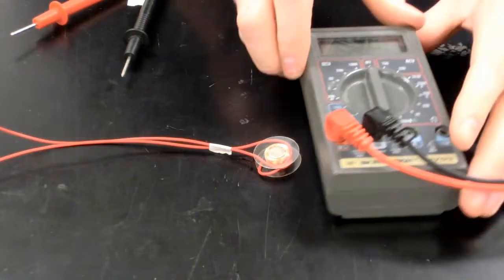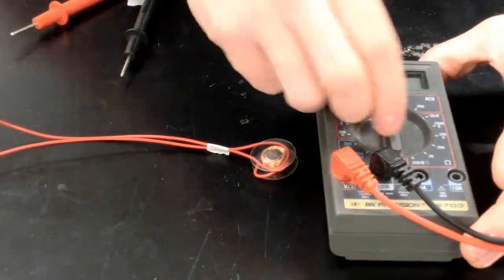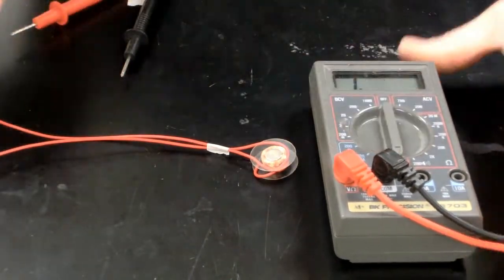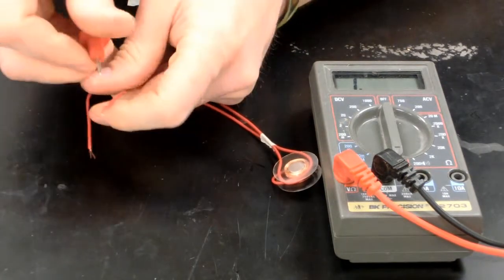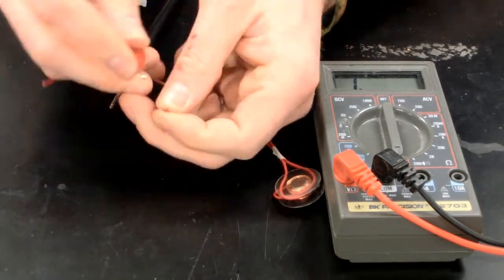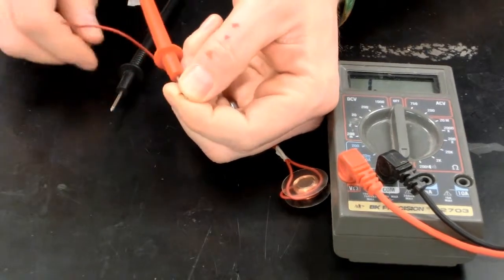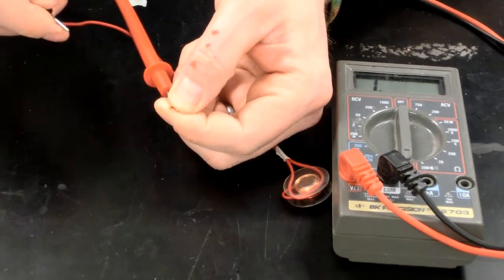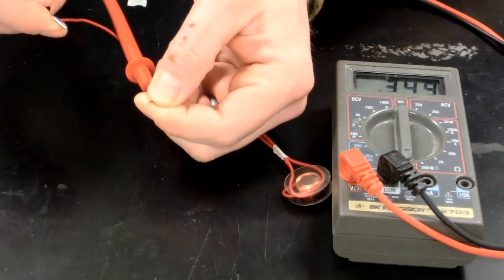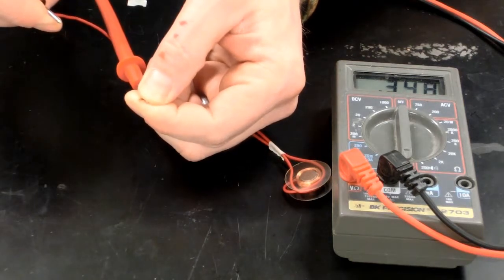Now before you celebrate, you're going to want to check to make sure this thing works. Take your multimeter, turn the dial to the continuity setting. Take the test leads from your multimeter and hold it on either one of the leads coming out of your pickup. If continuity shows, you're good to go.